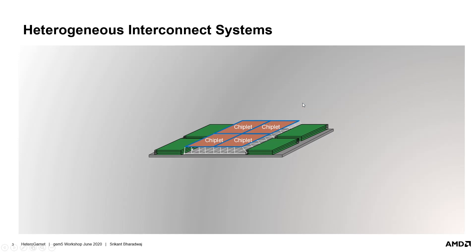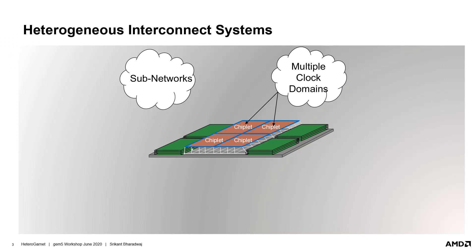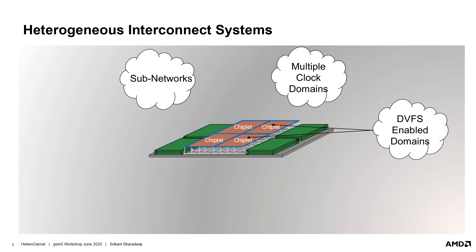Let's see the dimensions of heterogeneity that such a modern processor could bring in terms of the interconnect system. Firstly, there could be multiple sub-networks — interconnect networks within each chiplet as well as the network on the integrating interposer. Next, each chiplet could potentially have a clock domain of its own, and the interposer network could be working at its own clock domain. Each of those clock domains could be enabled with DVFS mechanisms that further increase the heterogeneity in the interconnect system.